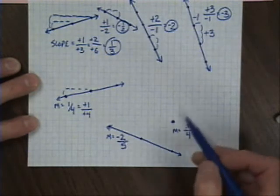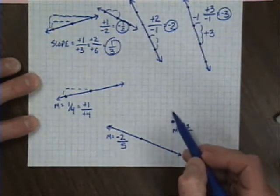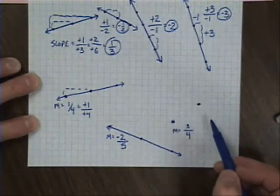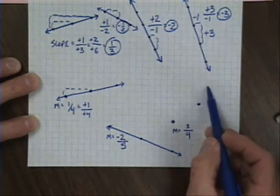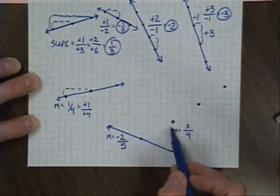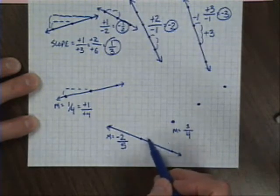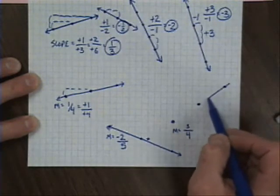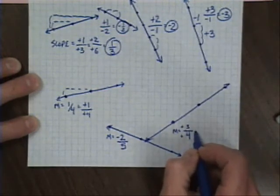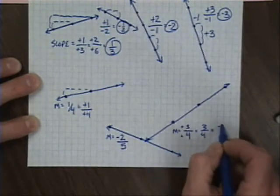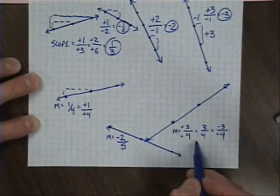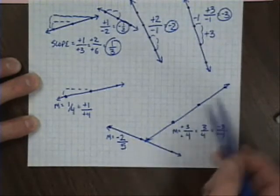Finally, three-fourths. You should know the routine at this point: up three, right four. There's my next dot. Up three, right four again. By the way, you could have also gone down three and left four — because a negative three divided by a negative four also makes a positive. So you do have some flexibility to keep that pattern going.